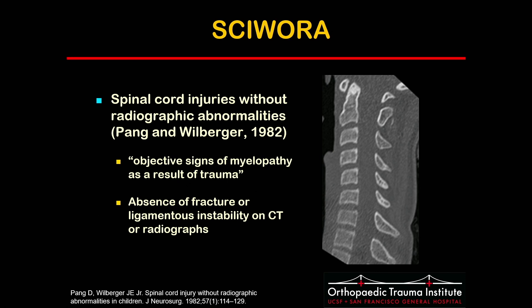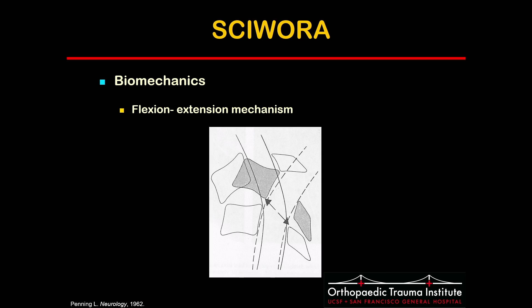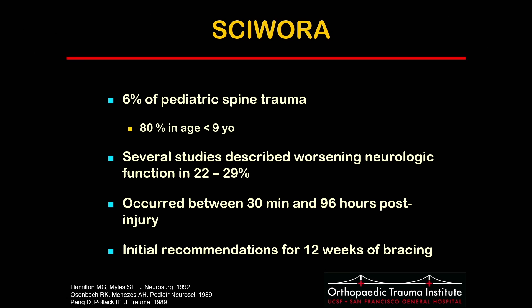Another injury pattern common in the young but not seen in adults is SCIWORA — spinal cord injury without radiographic abnormalities. First described in the 1980s and early 90s before MRI, it was defined as objective signs of myelopathy from trauma with absence of fracture or ligamentous instability on CT or radiographs. This is caused by the hyperflexibility of the pediatric spine in a flexion-extension mechanism where the vertebral body pinches the cord between the posterior elements. These injuries account for 6% of pediatric spine injuries, with 80% occurring in ages less than nine. Late deterioration has been described occurring between 30 minutes and 96 hours post-injury, thought to be due to secondary swelling from the inflammatory process.